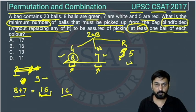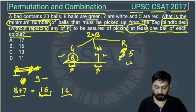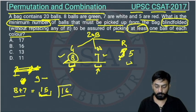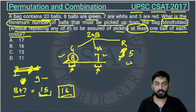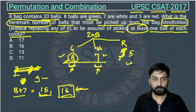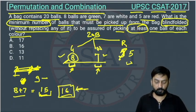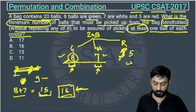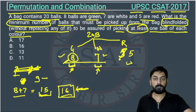So if we are picking 16 balls, we can be sure that we are picking a ball of each color. There is no possibility where each type of ball is not represented. Therefore, the minimum number of balls that must be picked is 16.